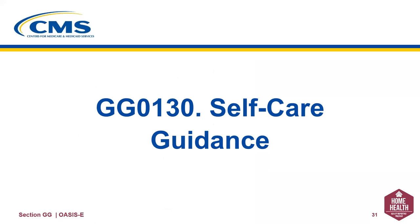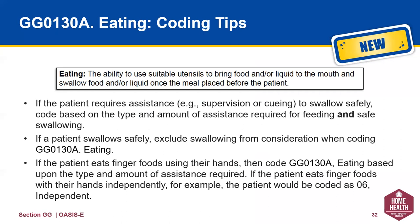Now let's take a look at the guidance specifically for GG0130. 130A looks at eating. Eating is the ability to use suitable utensils to bring food and/or liquid to the mouth and swallow food or liquid once the meal is placed before the patient. If the patient requires assistance, supervision, or cueing to swallow safely, code based on the type and amount of assistance required for feeding and safe swallowing. If the patient swallows safely, exclude swallowing from consideration when coding. If the patient eats finger foods with their hands, code 130A eating based upon the type and amount of assistance required. If the patient eats independently, they would be coded as 06 independent.